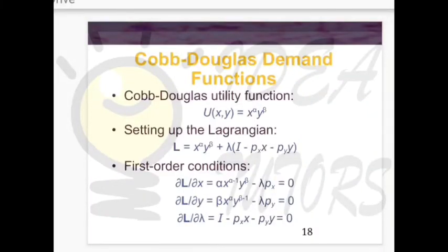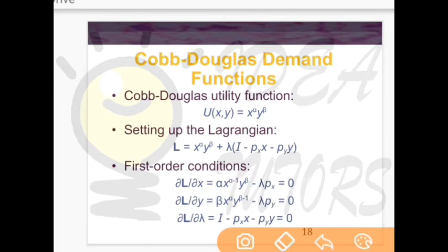In this video we will cover how to find the quantity of good X and Y that maximizes the utility of a consumer using the Lagrange multiplier. It is a mathematical way of finding the quantity of goods that maximize utility. We have a Cobb-Douglas utility function here, and we will discuss the basic idea of how to set up a Lagrange and find the quantity of goods that maximize utility.